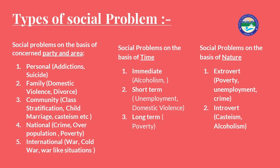We will now talk about types of social problems. Social problems can be categorized on the basis of concerned party and area, time, and nature. Based on concerned party and area: personal problems include addictions and suicide; family-level problems include domestic violence, divorce, and abuse at home; community-level problems include class stratification, child marriages, casteism, and regionalism.